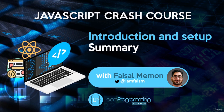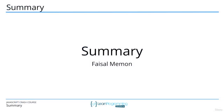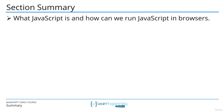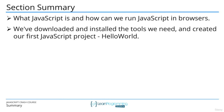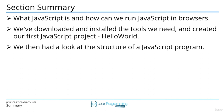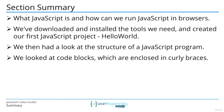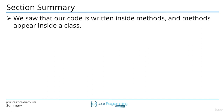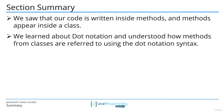In this section summary: we looked at what JavaScript is and how to run it in browsers. We downloaded and installed the necessary tools and created our first JavaScript project — hello world. We then looked at the structure of a JavaScript program, code blocks enclosed in curly braces, and code written inside methods which appear inside a class. We also learned about dot notation for referring to methods from classes.